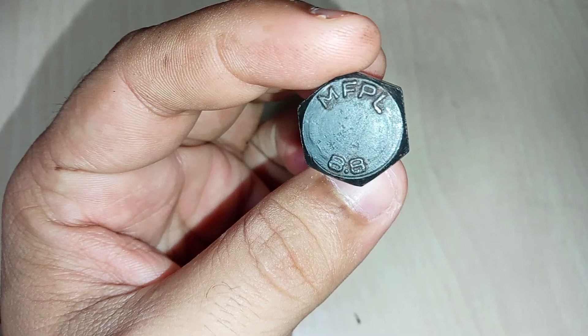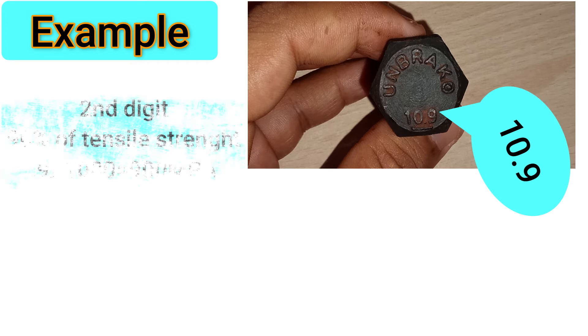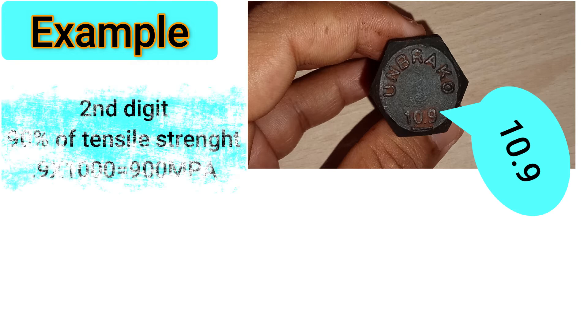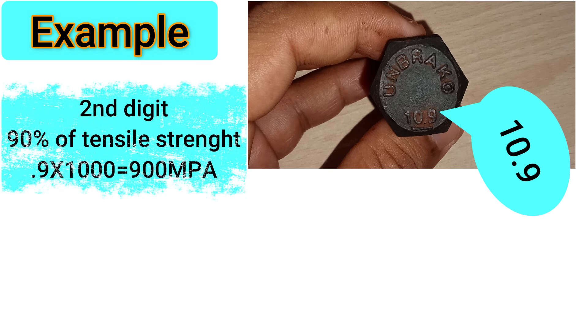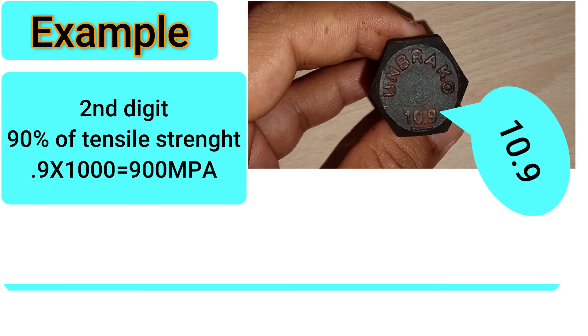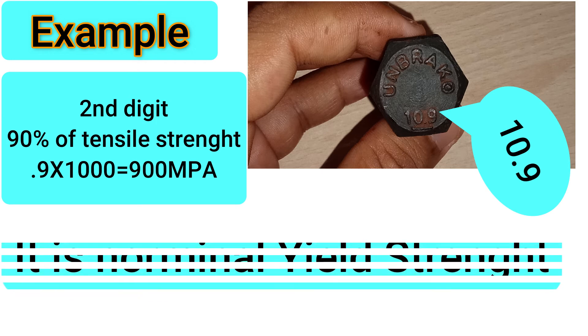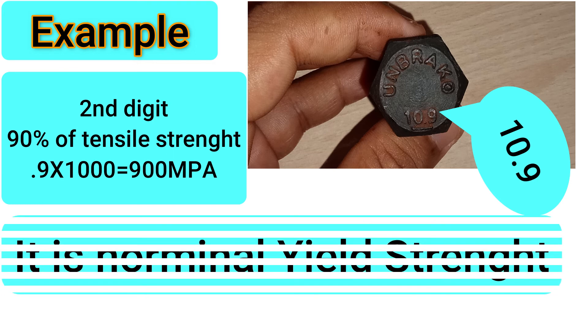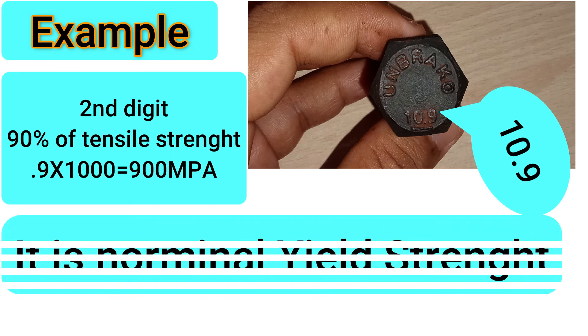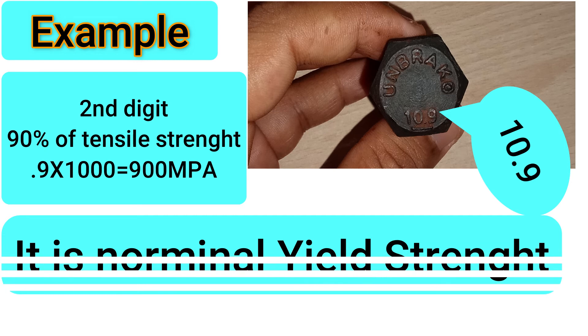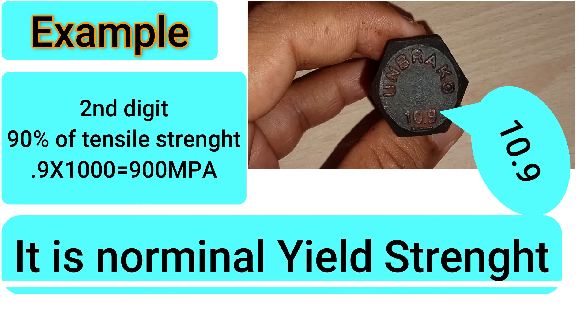The second digit number 9 shows the percentage. Which percentage? When you multiply this percentage with the tensile strength, you'll get yield strength. That is, 0.9 into 1000 is 900 megapascal. This 900 megapascal is the yield strength. If instead of 9 you see 0.8, it means 80 percent, or 0.6 means 60 percent of tensile strength.